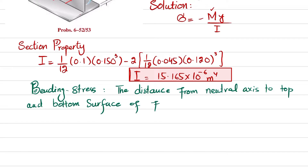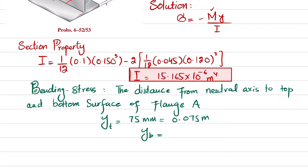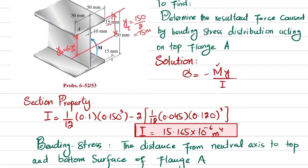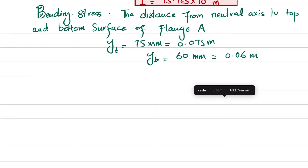The distances from the neutral axis to the top and bottom surfaces of flange A are: y_top = 75 mm (0.075 m) and y_bottom = 60 mm (0.06 m), as shown on the diagram.